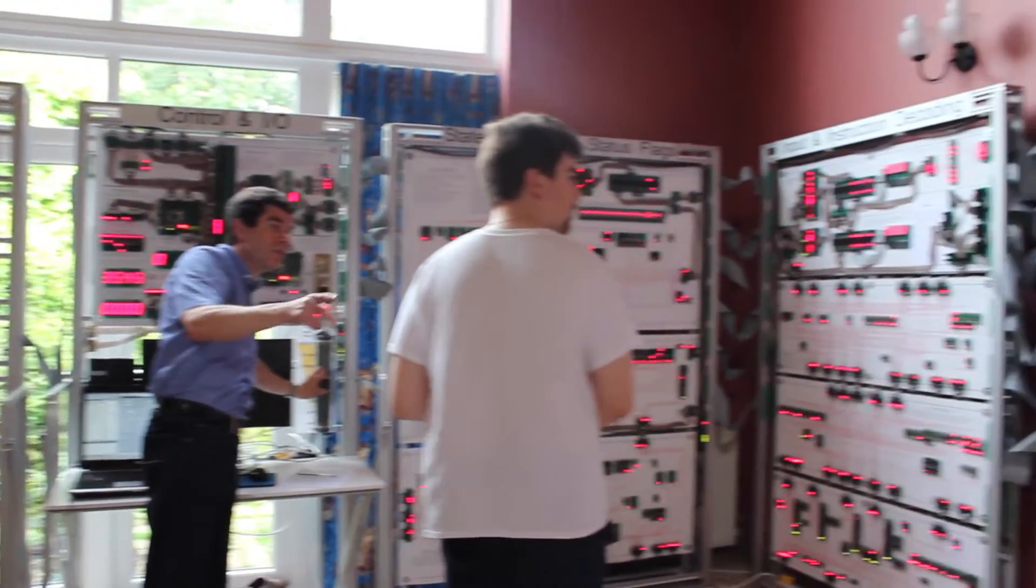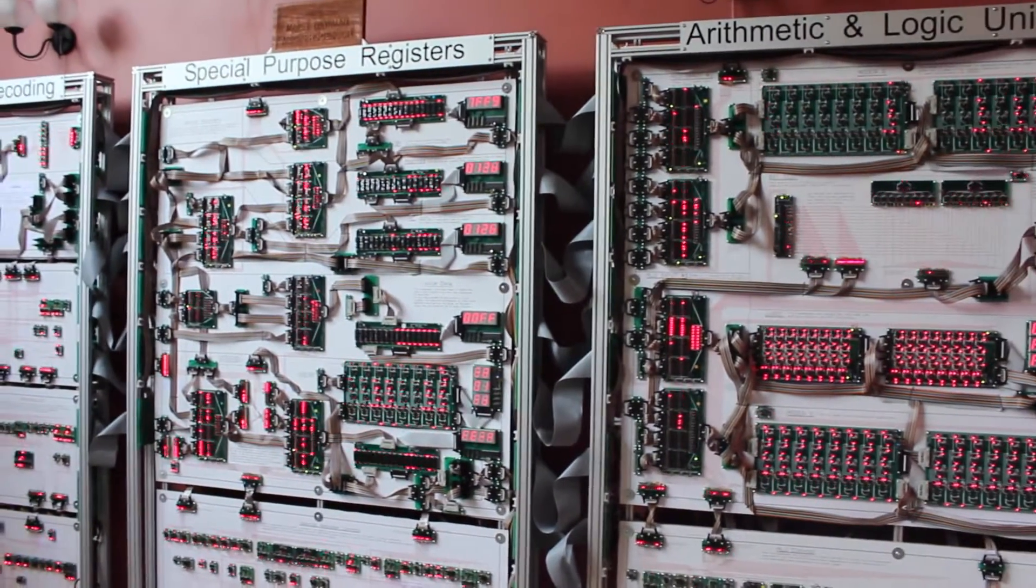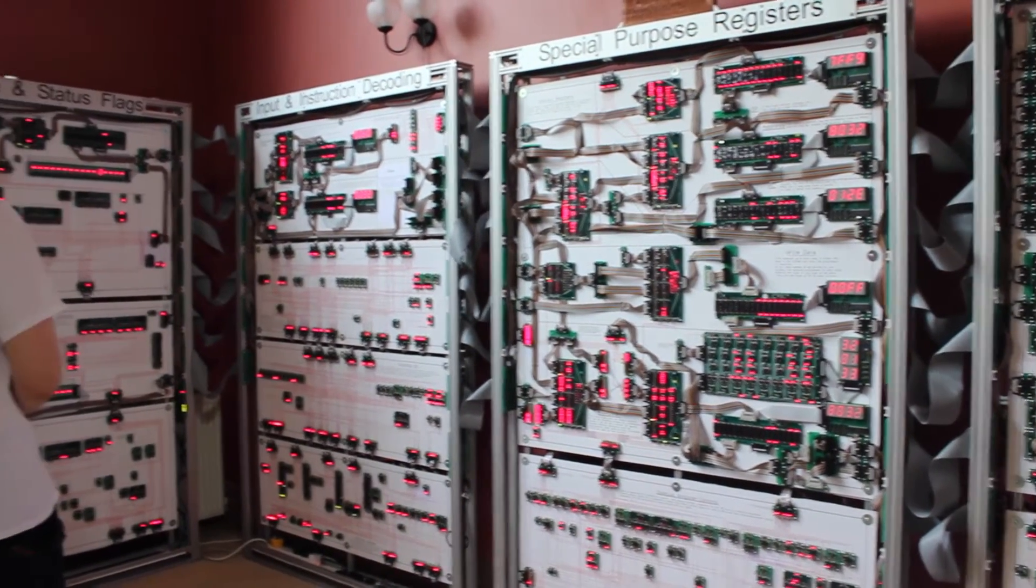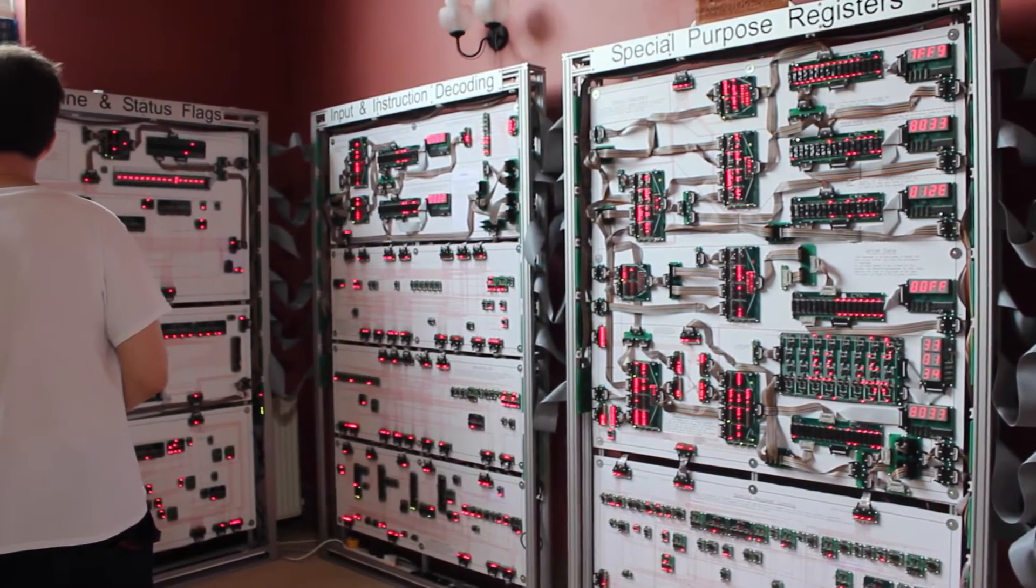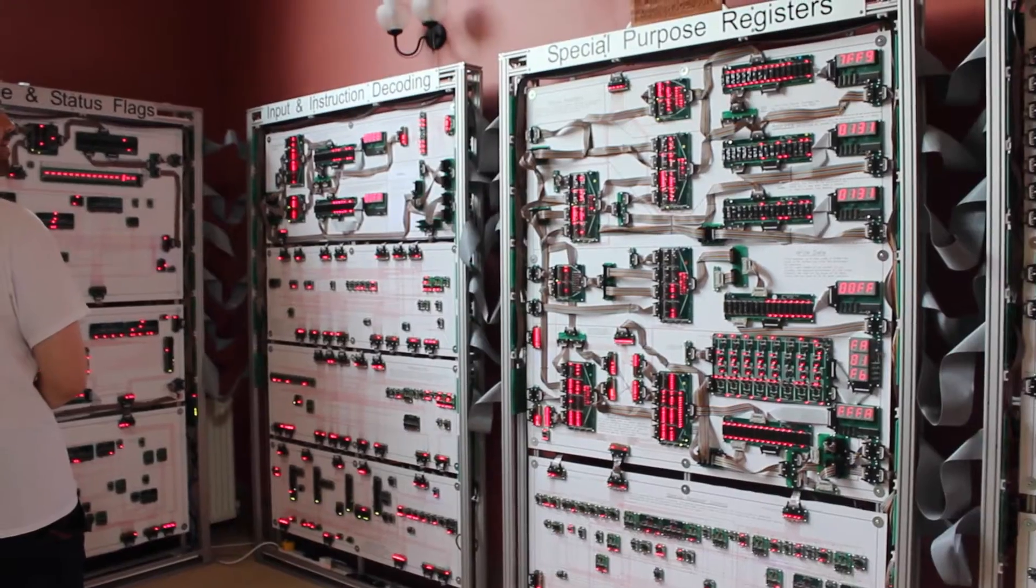I control the speed of the processor here. This clock speed knob - you can slow it down. As you slow down to a human time scale, you can start to see it doing its thing. Then you can halt it and do single steps, so you can actually follow every bit of the logic as it goes through.